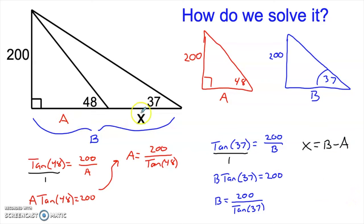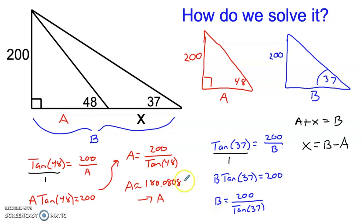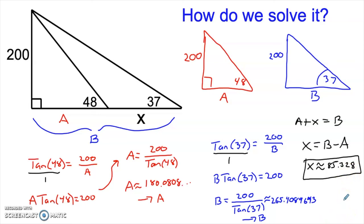If you can't see that x is b minus a, you can think that a plus x equals b, and then subtract a from both sides. Plugging into our calculator, a is approximately 180.0808 — I store that in my calculator as the letter a to keep all the decimal places. b is approximately 265.4090 — I store that as b. Then b minus a gives us x approximately equal to 85.328. All we did was solve two simple tangent problems in two different right triangles, then use those results to calculate x.